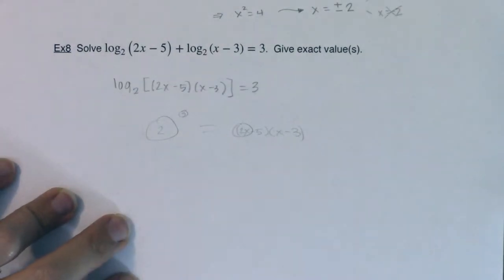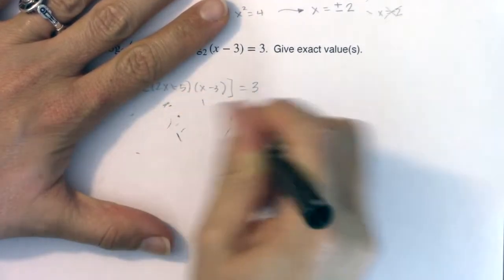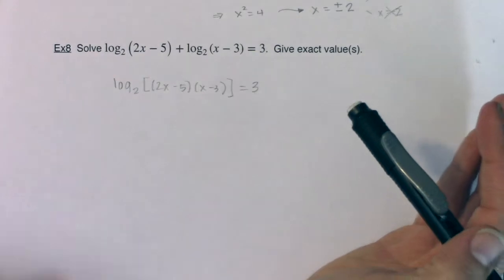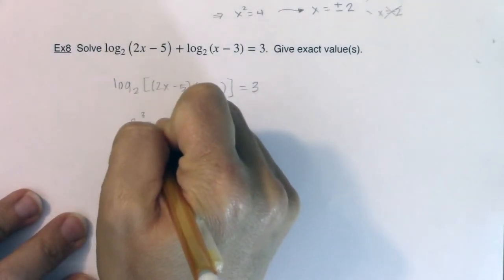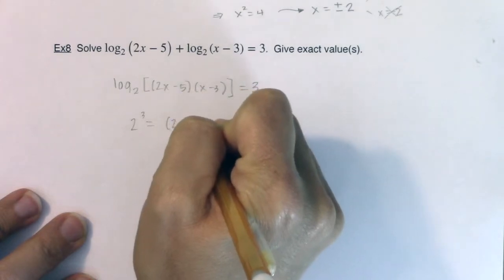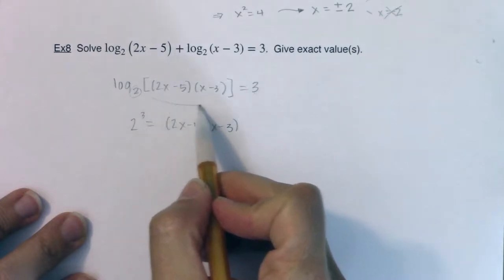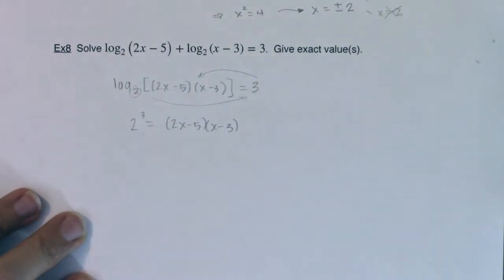Let me erase all those circles and clean this up just a little bit. So taking a look, I really have that 2 cubed is equal to 2x minus 5 times x minus 3. That's the equivalent equation, and then I basically have a quadratic equation that I need to solve.